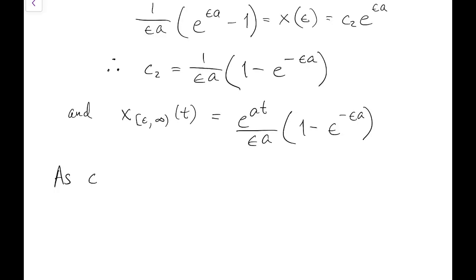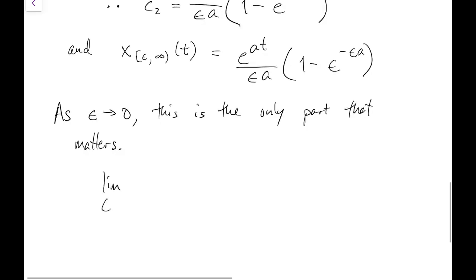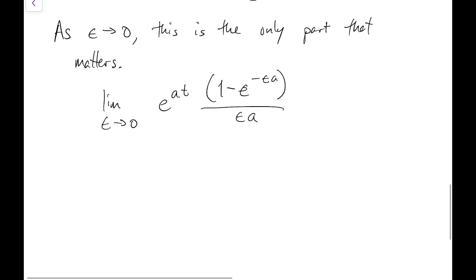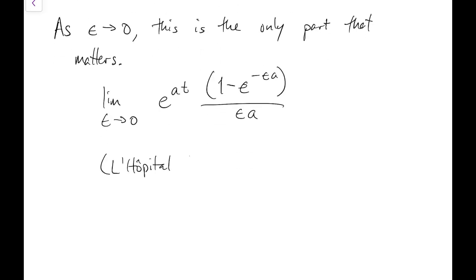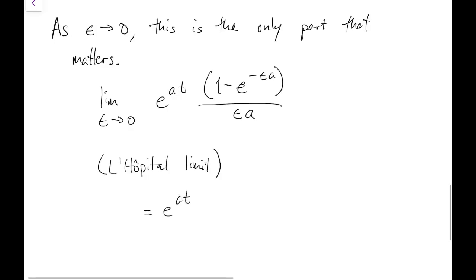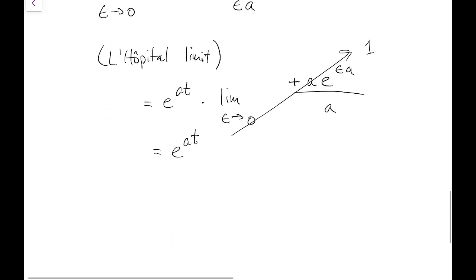Now we let epsilon go to 0 to find the impulse response. We only care about the second segment since we're looking at t greater than epsilon as epsilon goes to zero. We can use L'Hopital's rule to find this limit. Since epsilon is the variable, we take derivative of numerator and denominator with respect to epsilon, and find that this limit is just 1. So the impulse response is e to the at.